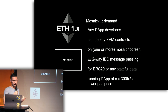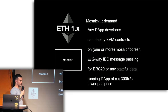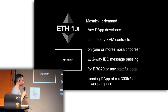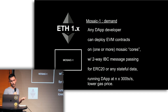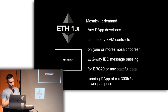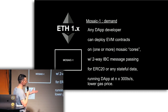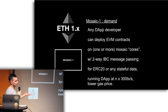On the demand side, any dApp developer can now deploy EVM contracts to one or more of these meta blockchains or cores. You can pass messages between the chains — you can send both ERC-20 tokens or other message data from Ethereum 1x to this core or back. And then within each core, you can comfortably run at 300 transactions per second. Plus, you don't have to pay for proof of work.